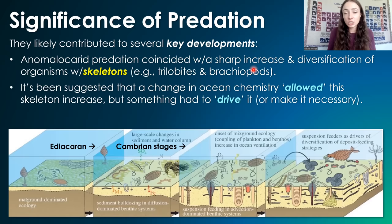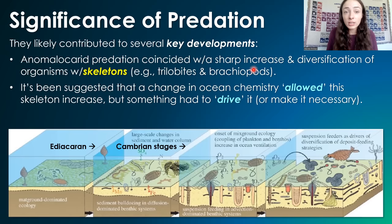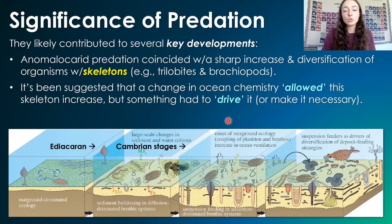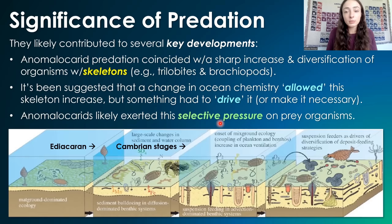It's been suggested that a change in ocean chemistry — in which calcium carbonate became a lot more thermodynamically favorable to secrete, meaning the ocean chemistry became easier to make skeletons out of — may have potentially allowed this skeleton increase. But something had to actually drive it, trigger it, or force it to happen.